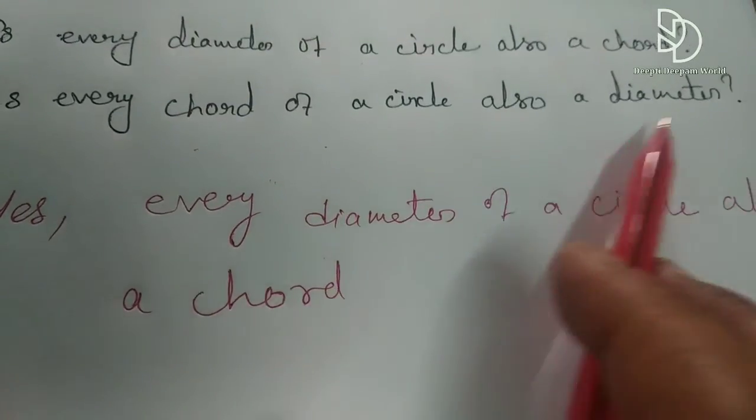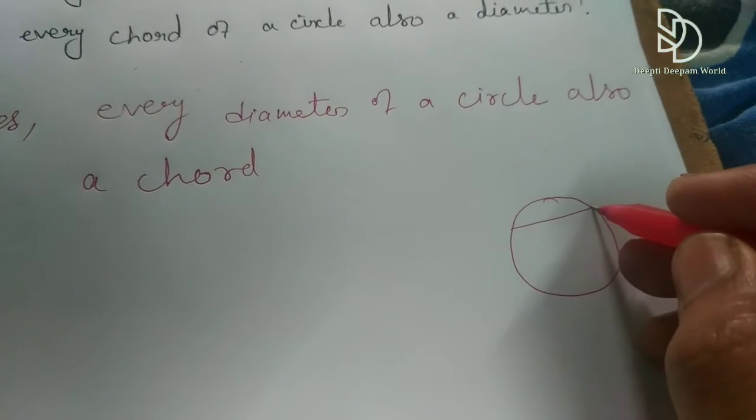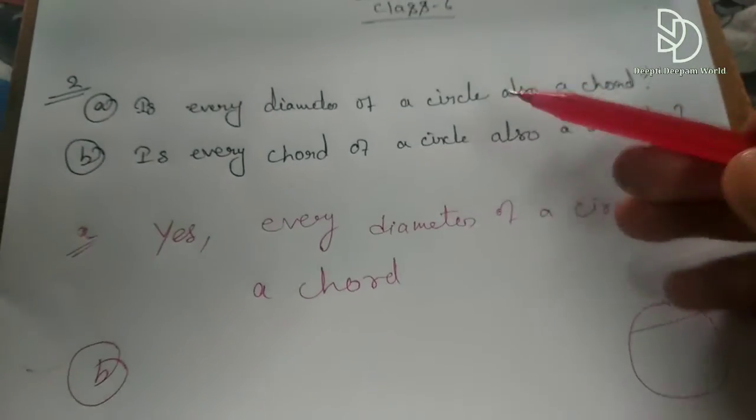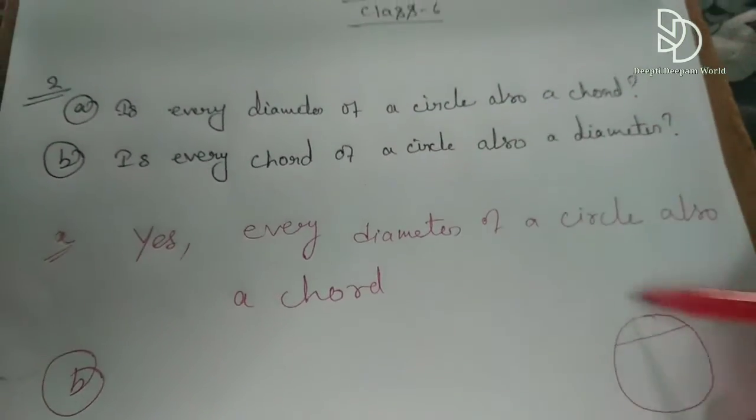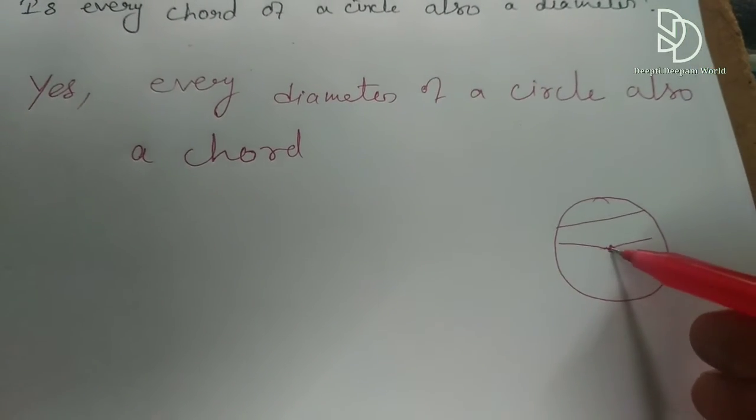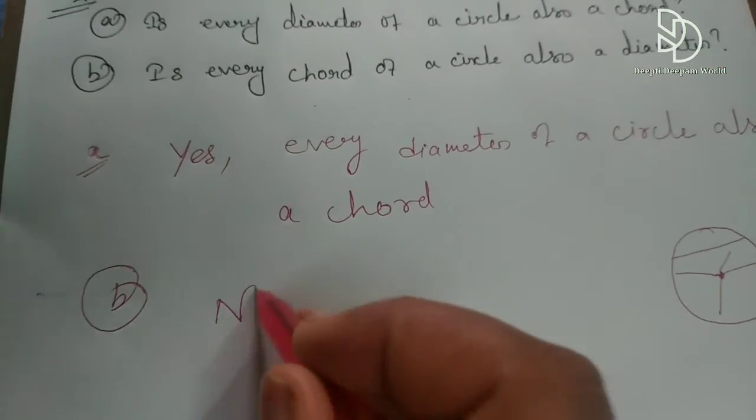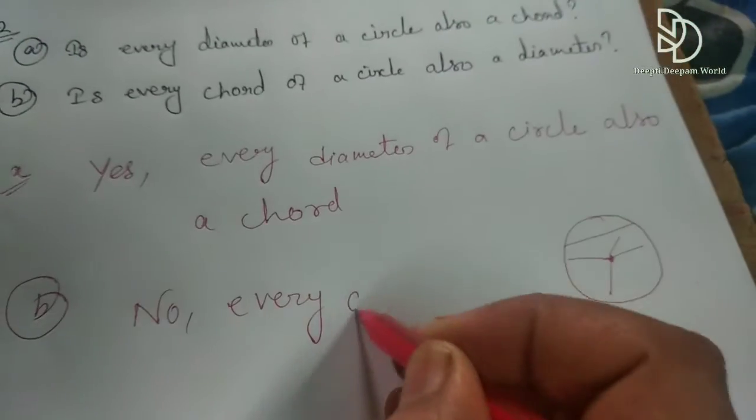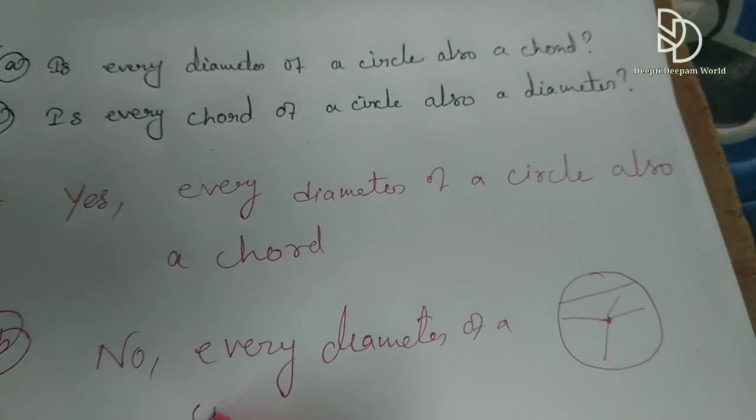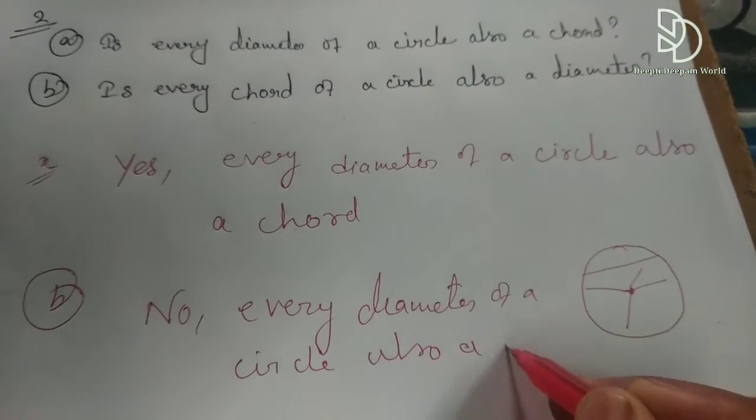Is every chord of a circle also a diameter? Now this is a chord, so this is not a diameter. Not every chord passes through the center. That's why this answer is no. No, not every chord of a circle is also a diameter.